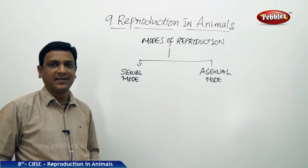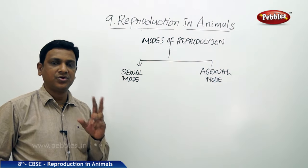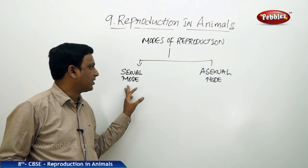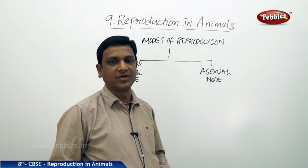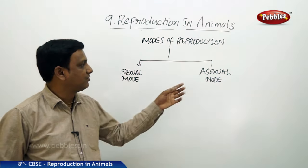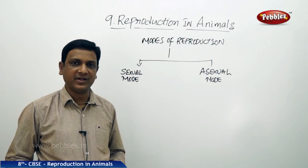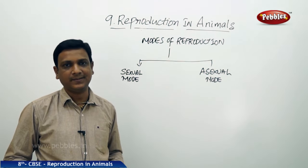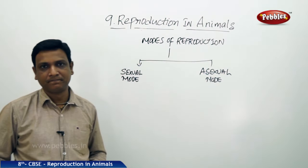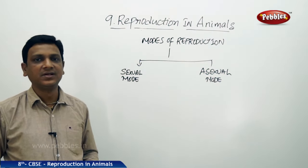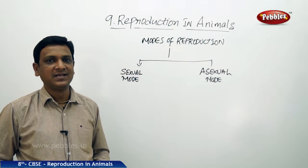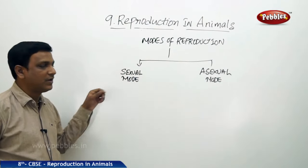Just like in plants, there are two different modes of reproduction observed in animals: sexual mode of reproduction and asexual mode of reproduction. In plants we find many examples of asexual reproduction, but in animals it is limited. Most animals take part in sexual mode of reproduction. Only in a few cases do we find asexual mode of reproduction. The majority of animals reproduce by the sexual mode.